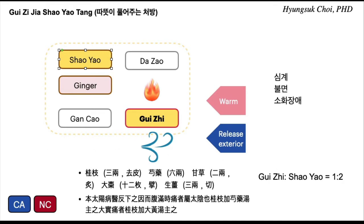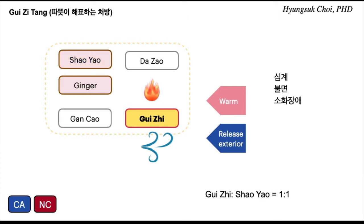This is the mystery and beauty of Chinese medicine: same ingredients, but only the ratio is altered and the function is changed. So gui-ji-tang is one-to-one.